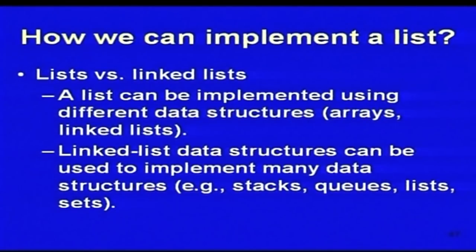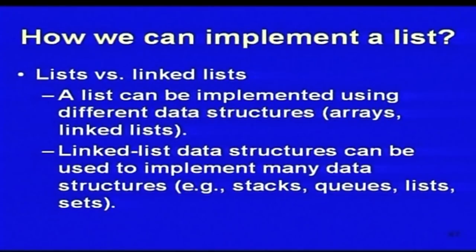Array has its own advantages: if the list is used mainly for searching and traversal, then array implementation is the best. You can also implement a list using linked list. There is a slight confusion among students about what is a list and what is a linked list. Actually, a list is nothing but a list of names or numbers and has nothing to do with implementation. List can be implemented using different data structures — arrays or linked list. Linked list data structure is used for implementation. Also, linked list can be used not only for lists but also for implementing queues, stacks, trees, and so on.